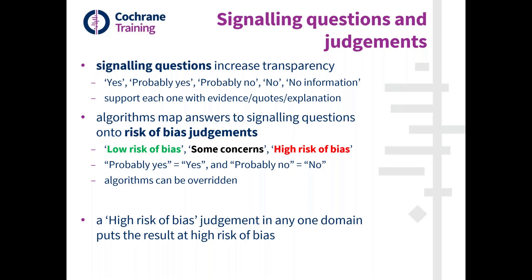The algorithm aims to propose a high risk of bias judgment only if the problems in the domain are such that the result as a whole should be considered to be at high risk of bias. In other words, high risk of bias in any domain is sufficient to determine the overall risk of bias for that result. This can also be overridden, but that will be covered in November in my session on overall risk of bias.